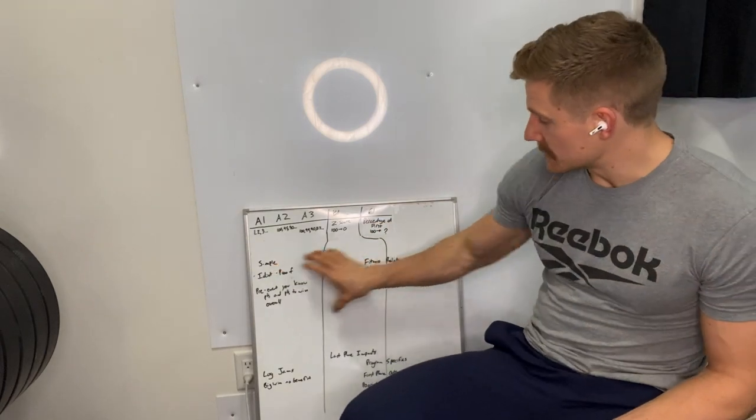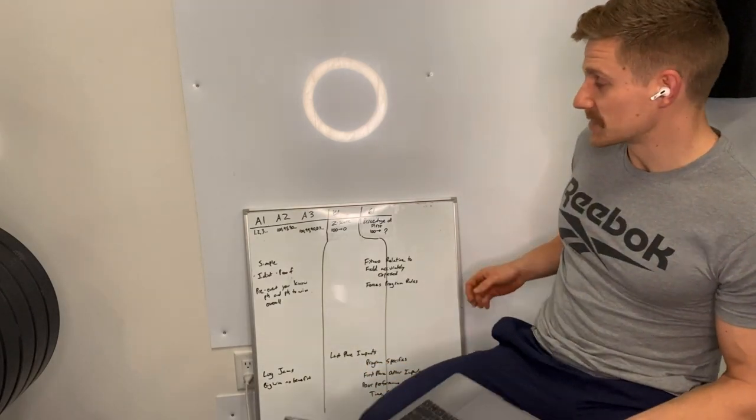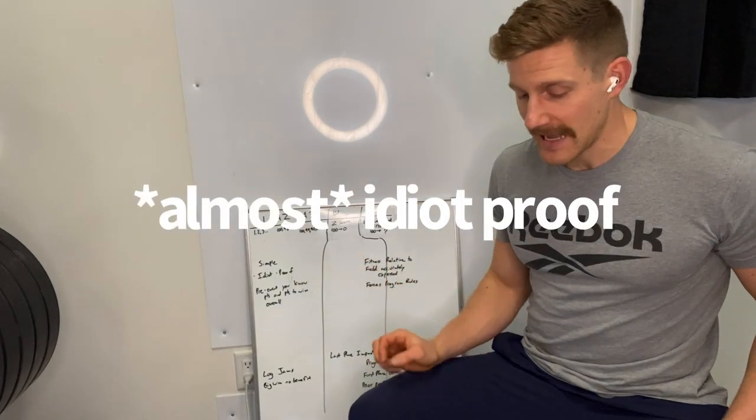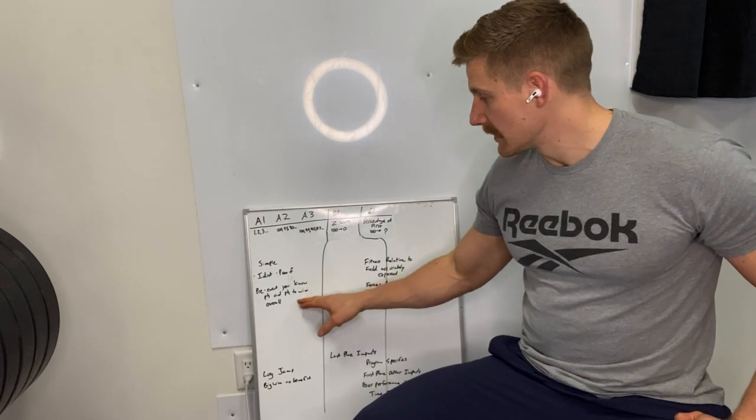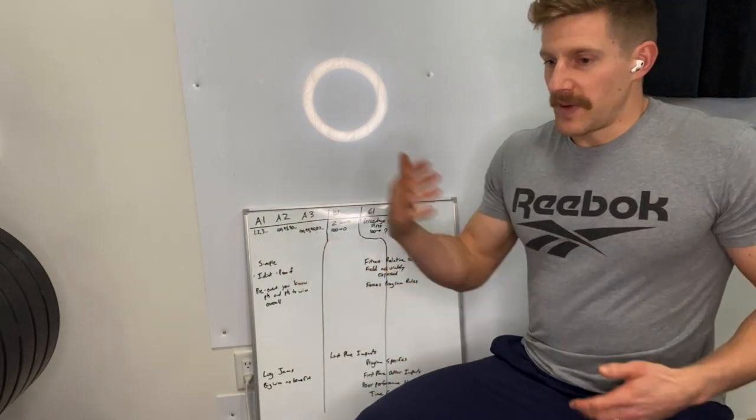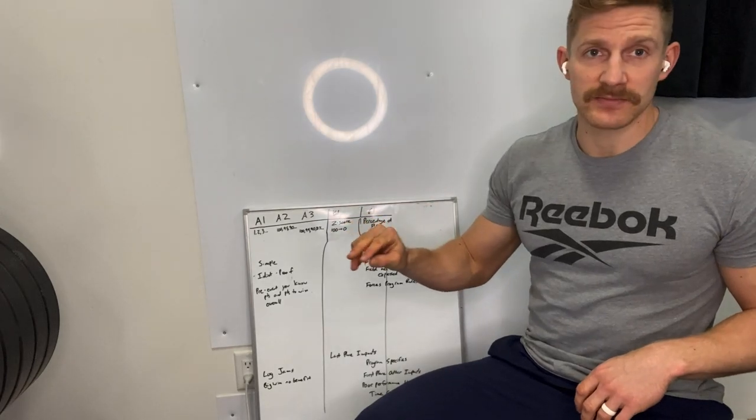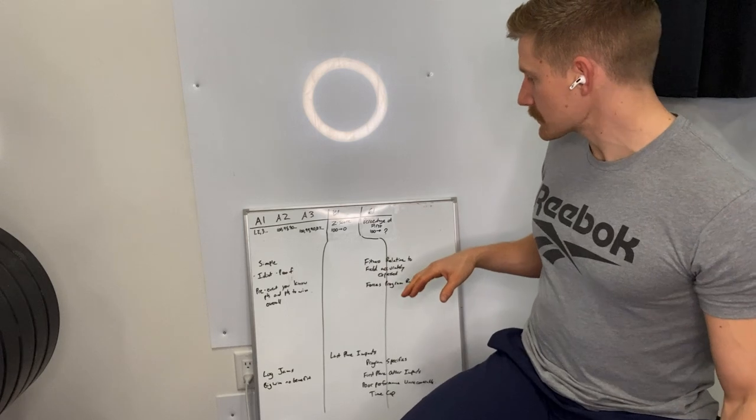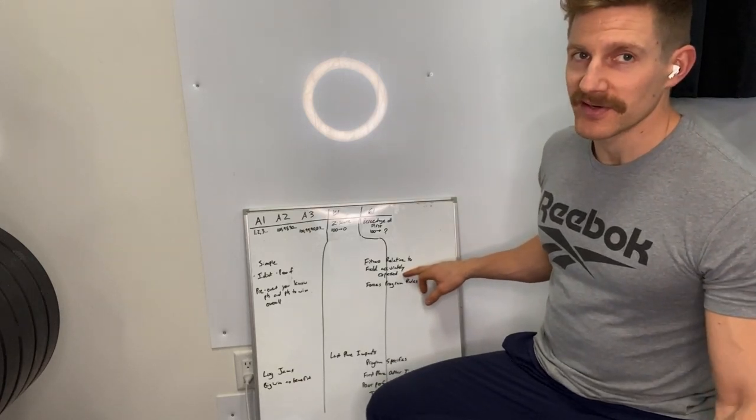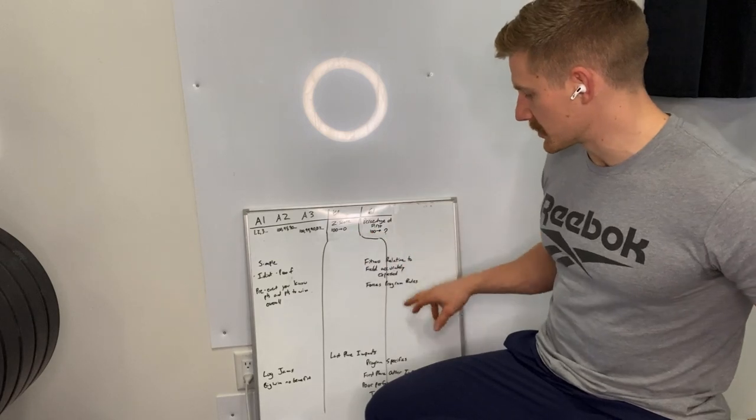I'm going to go through the top here in black are some pros, and then the bottom, also in black even though I have different colored markers, are some negatives. Positives of this first system: it's simple, it's idiot-proof as far as programming is concerned. As long as you can sort athletes from best to worst, you can give them the ranking. Pre-event, you know the point spread and the points to win overall. Your fitness relative to the field is accurately expressed, and it forces programming rules which could be perceived as positive or negative.